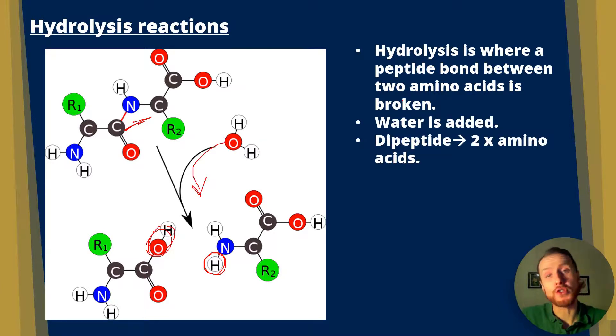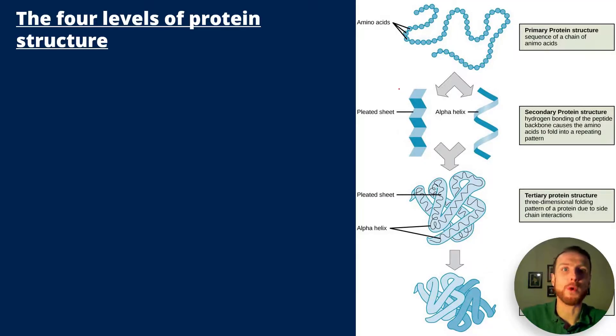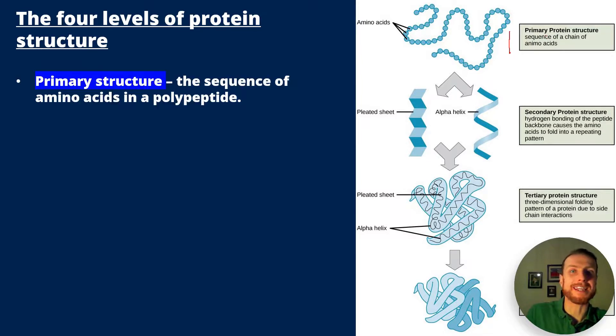Next we have the four levels of protein structure. You need to know about this for the AQA A-level biology exam. First, we have the primary protein structure. This is the sequence of amino acids in a polypeptide. You can see this long chain of amino acids joined up with peptide bonds. It's always the NH2 group of the right amino acid joining up to the carboxyl group of the left amino acid.